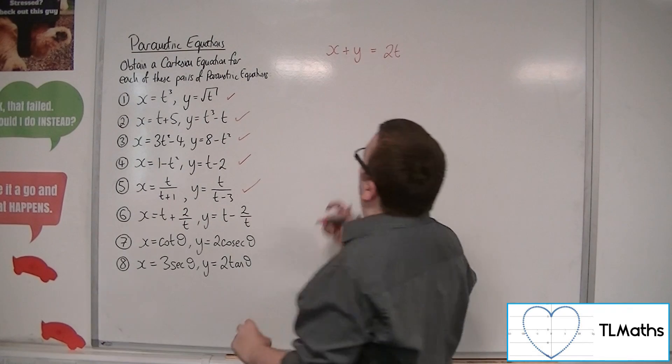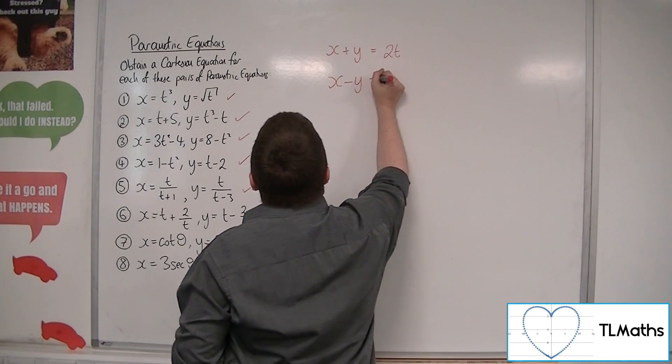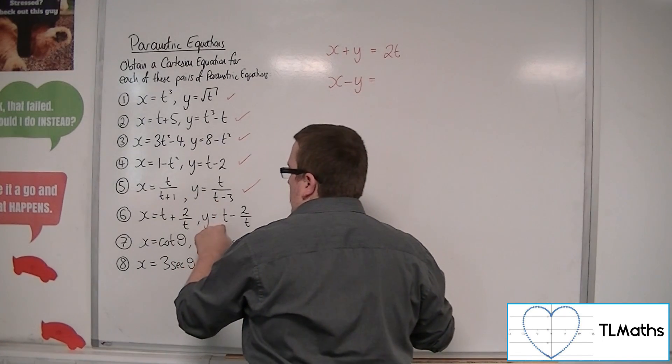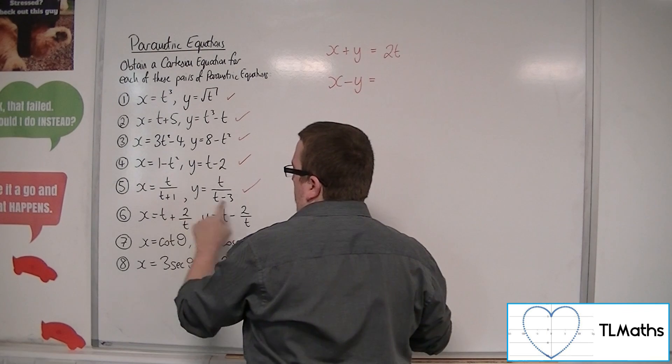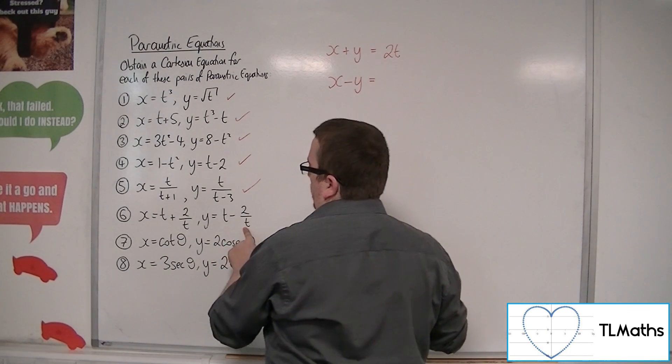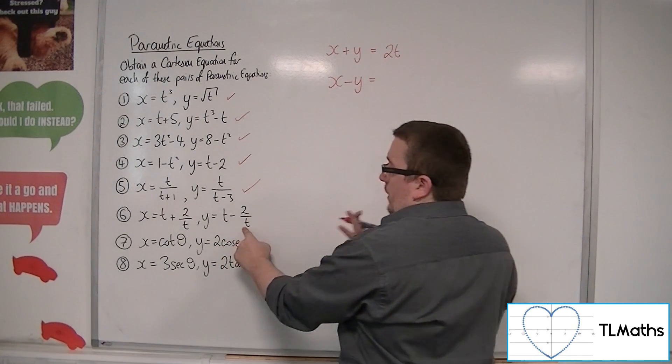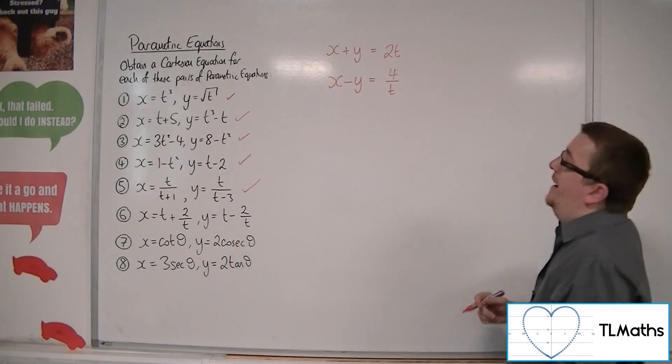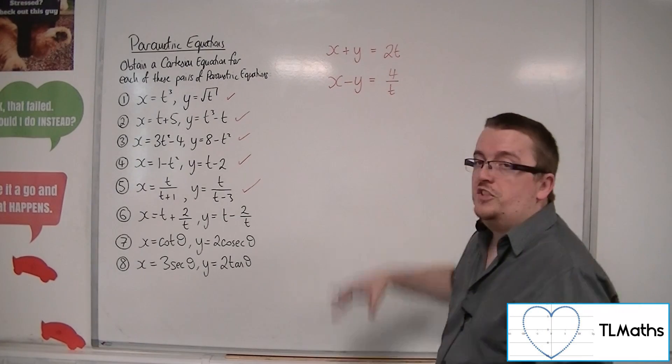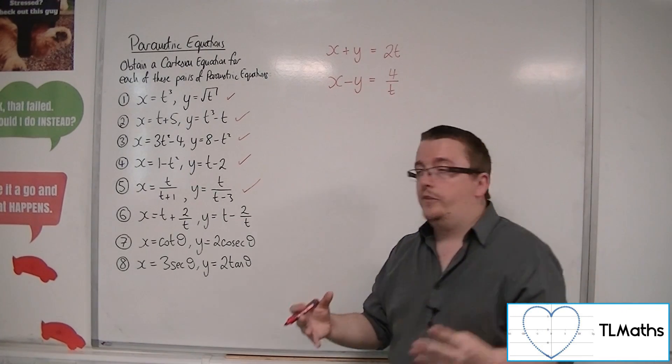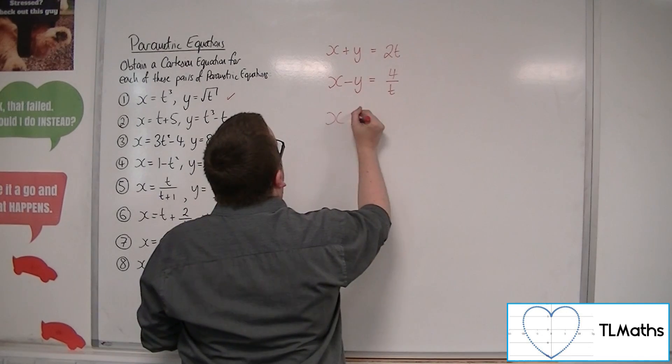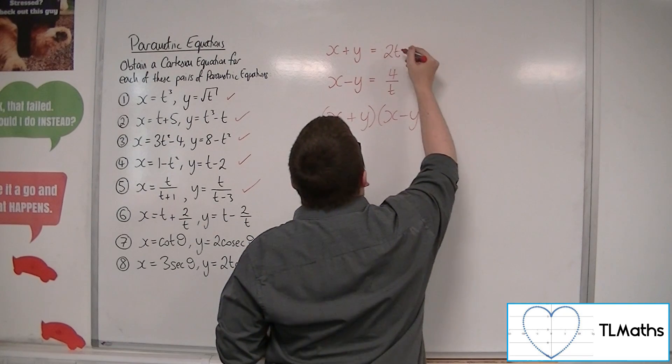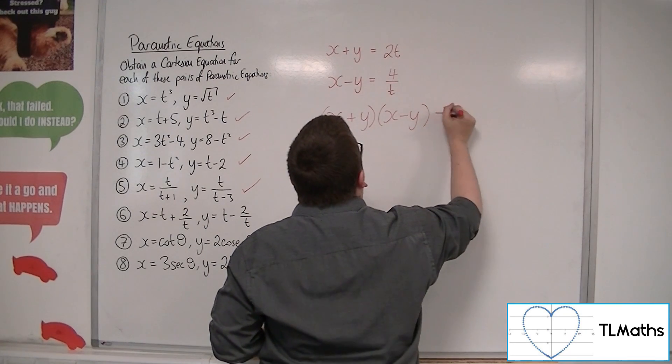And if I also find out what x minus y is equal to, so I'm going to get t take away t, so that's 0. 2 over t take away minus 2 over t is 2 over t plus 2 over t, so that's 4 over t. And now, if I multiply these two equations together, I will cancel the t's out. So, I'll get x plus y times x minus y is equal to 2t times 4 over t, which is just 8.